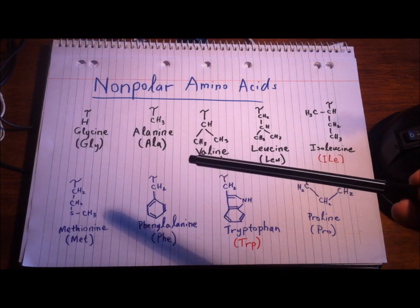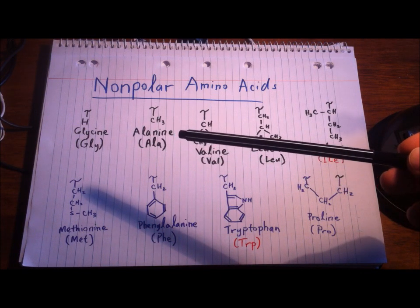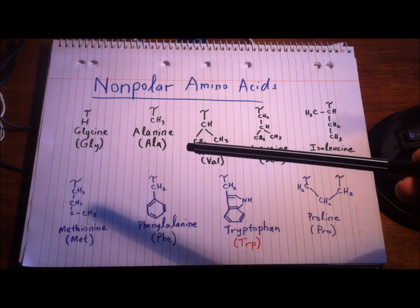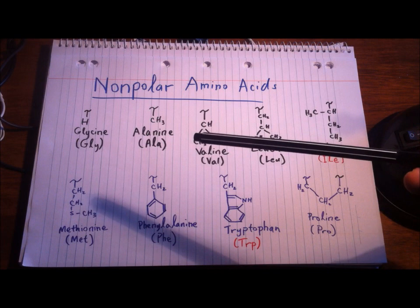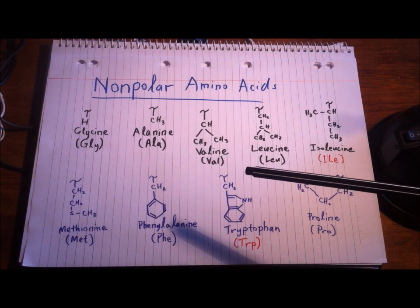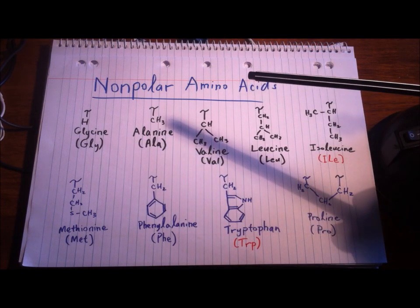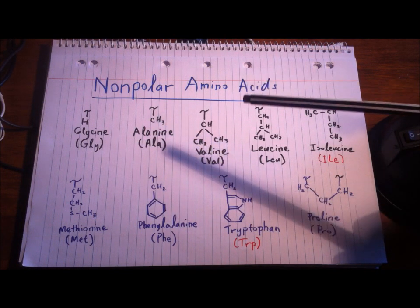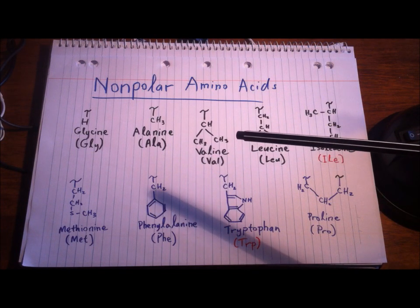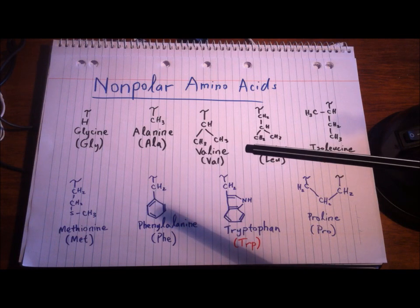Moving on, we have methionine. The way I remember its R group is that it has three carbons and a sulfur — none of the other amino acids have three carbons and one sulfur. Phenylalanine looks a lot like alanine, but one of its hydrogens is replaced with a phenyl group — hence phenylalanine. That is also a nonpolar amino acid.